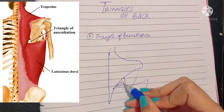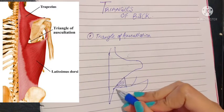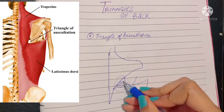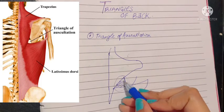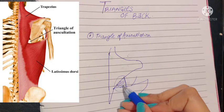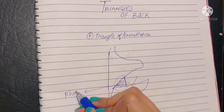Right over here this is the triangle of auscultation. What muscle is this? This is a muscle that gets inserted into the medial border of the scapula. This is the rhomboid major muscle.